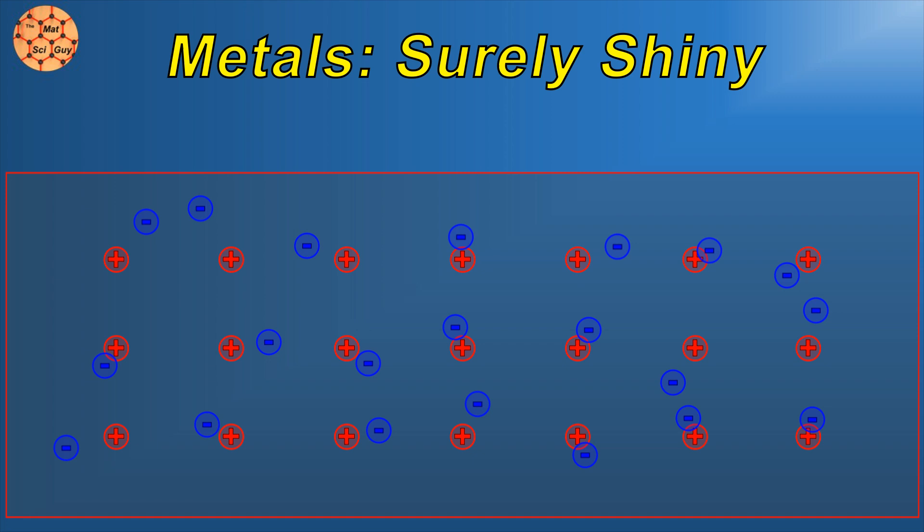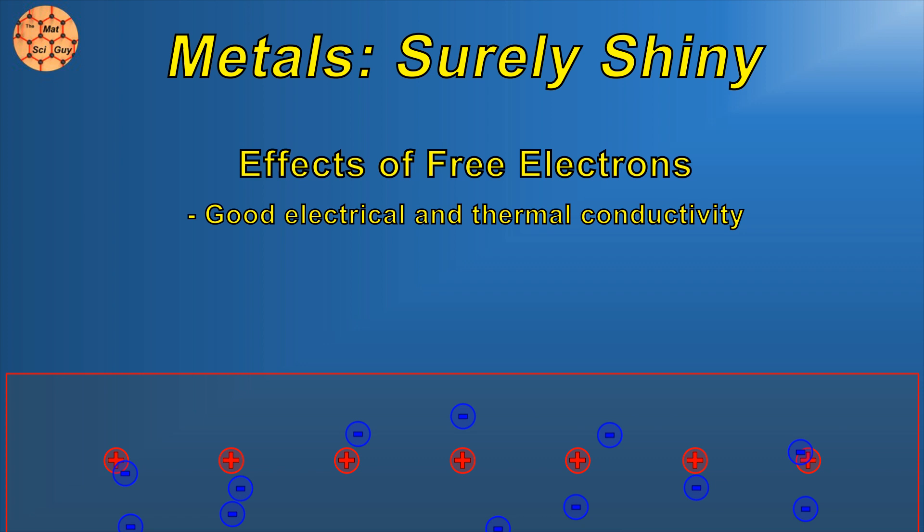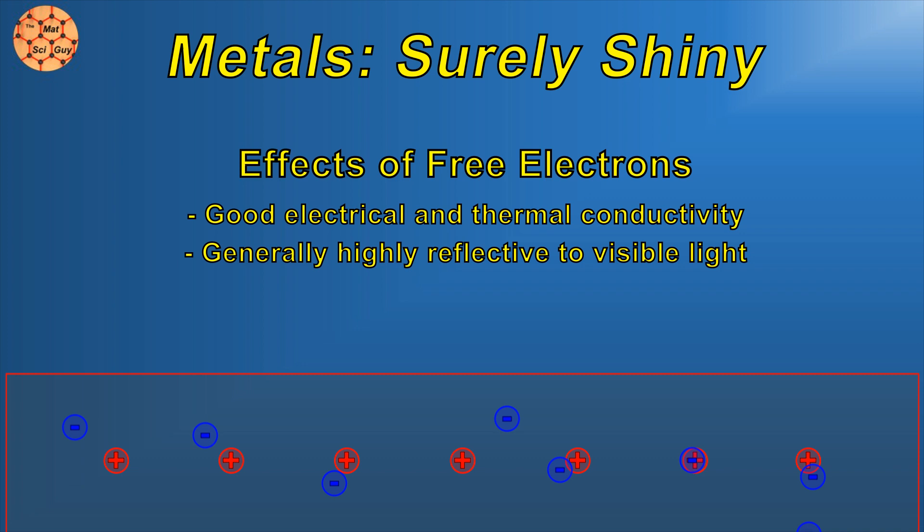These delocalized electrons give rise to most of the common properties you associate with metals. It makes them good electrical conductors, since these free electrons can obviously conduct electricity. It also makes them shiny for reasons that are a bit more complicated. But basically what it boils down to is that these free electrons are free to interact with any incoming electromagnetic radiation, making them highly reflective to both visible and infrared light.